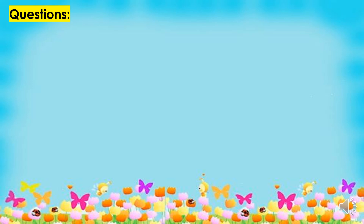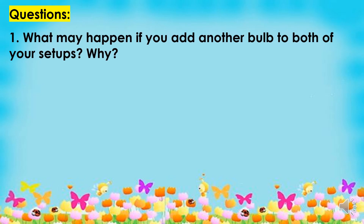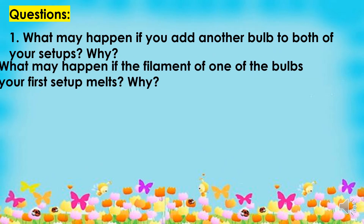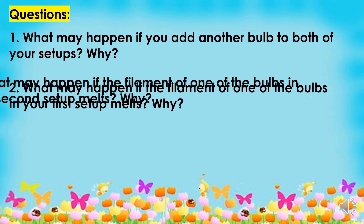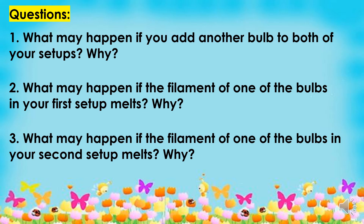Then after that, you will answer the following questions. Number 1: What may happen if you add another bulb to both of your setups, and why? Number 2: What may happen if the filament of one of the bulbs in your first setup melts, and why? Number 3: What may happen if the filament of one of the bulbs in your second setup melts, and why?